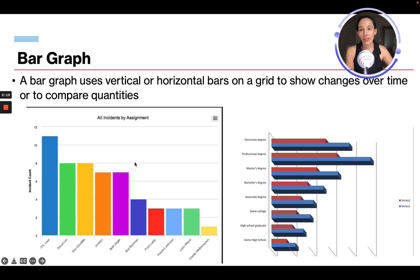All incidents by assignment, and then it has different users and shows their incident count. Or it can also be horizontal, showing the amount of people that have doctoral degrees or professional degrees.